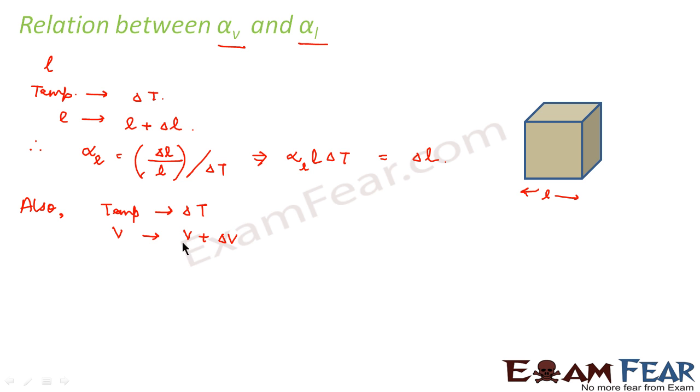Now from this, if you see, what is this delta V? This delta V is the change in volume. So we can write this delta V as the final volume, that is (l plus delta l) whole cube, minus the initial volume, that is l cube.